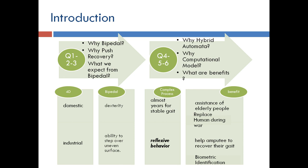Deploying robots in dangerous and dirty environments — such as bomb defusing, where the bomb could explode and cost a human life — is another major motivation. A machine can perform these tasks without risking human life. Space exploration is another use case: machines deployed in space can explore and gather information. Human beings have very good capability — we can walk on simple terrain, climb staircases efficiently, and navigate different kinds of surfaces.